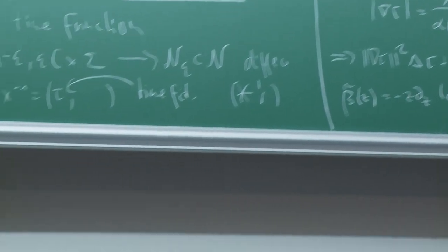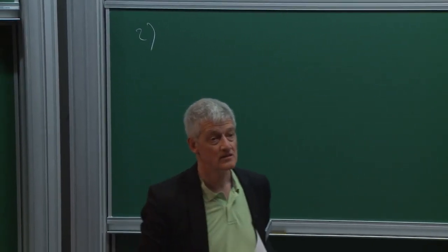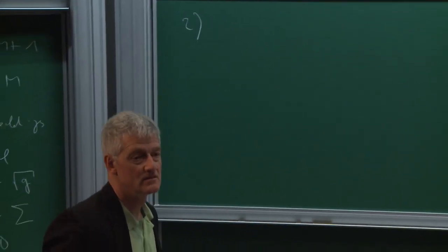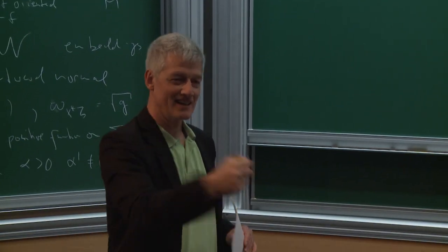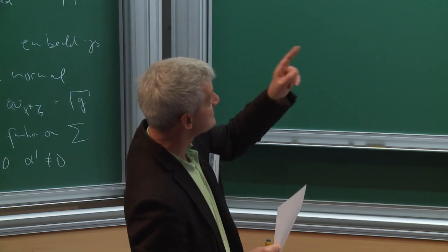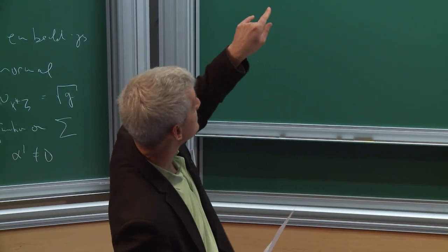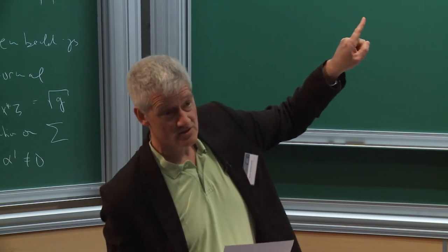So this is Laplacian with respect to the metric plus another function, beta tilde of tau minus 1. Then you get the second covariant derivative of tau evaluated. And this has to be 0. So this is a nonlinear second order PDE for the time function. That's the first part.